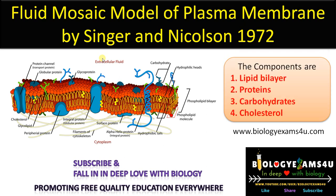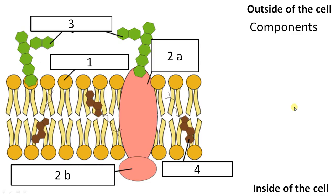The components of the plasma membrane as per the model are: it consists of a lipid bilayer, proteins, carbohydrates, and cholesterol. Let's move into the detail.